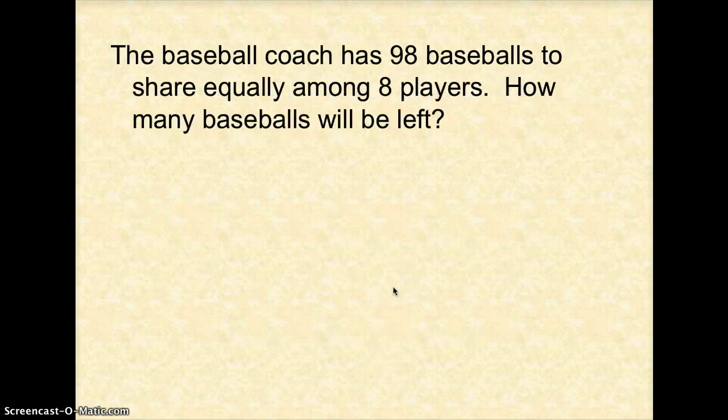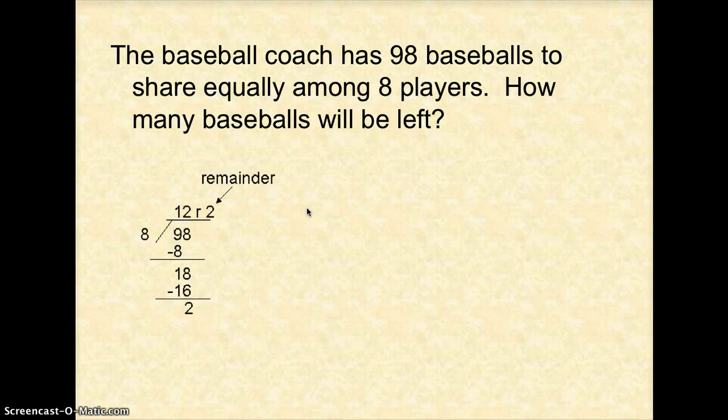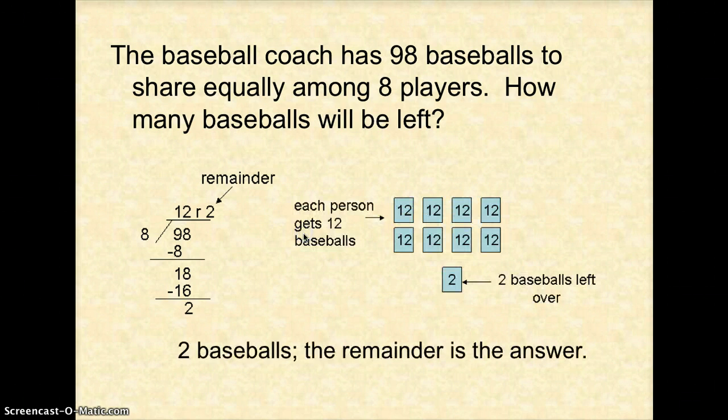The baseball coach has 98 baseballs to share equally among 8 players. How many baseballs will be left? So remember he's sharing equally so no one can have any more. So we're looking at equal groups. So 98 divided by 8. 8 can go into 9 one time. Put your 1 on top. 8 times 1 is 8. Subtract and I get 1. Bring down the 8. So then 8 can go into 18 two times, which is 16. Subtract and you get a remainder of 2. How many baseballs left? So on this one your remainder is your answer.